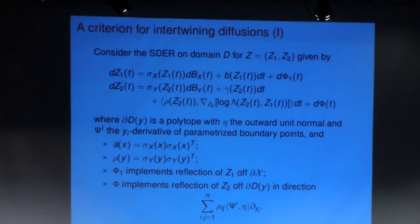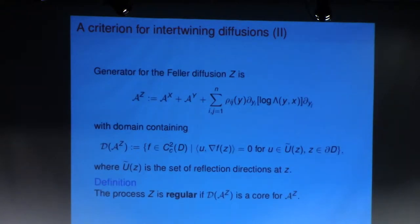Okay, so this is some complicated stochastic differential equation with three terms. So this corresponds to the coupling with X, and this is some term which enforces reflection off X.